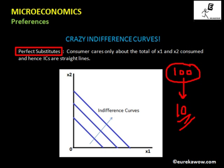For example, if the consumer consumes 10 units of Coca-Cola and 0 units of Pepsi, he will be at one point. If he consumes 0 units of Coca-Cola and 10 units of Pepsi, he will be at another point. If he consumes 5 bottles of each, he will be at yet another point. All these points give the same level of satisfaction because he is able to buy 10 bottles of soft drinks, whether Coca-Cola or Pepsi. As a result, in case of perfect substitutes, the indifference curves are straight lines.